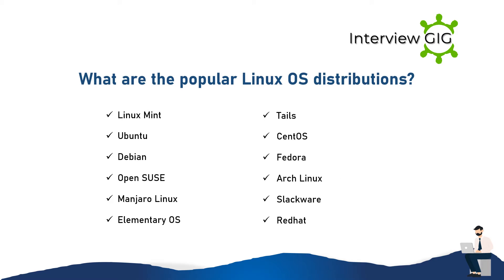What are the popular Linux OS distributions? Linux Mint, Ubuntu, Debian, OpenSUSE, Manjaro Linux, Elementary OS, Tails, CentOS, Fedora, Arch Linux, Slackware, and RedHat.